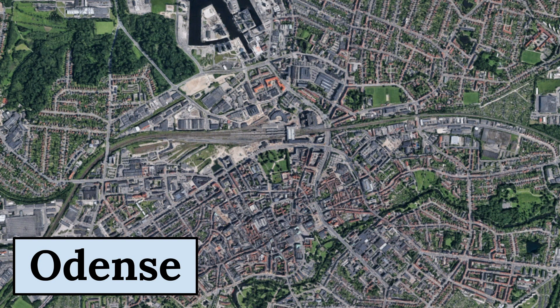Today, Odense is a vibrant city with a mix of modern and historic architecture. The city is known for its charming pedestrian streets lined with shops, cafes, and restaurants. Its urbanism is characterized by its modern infrastructure, including a network of bicycle paths that make it easy to get around the city.